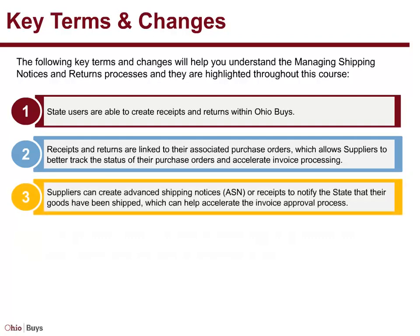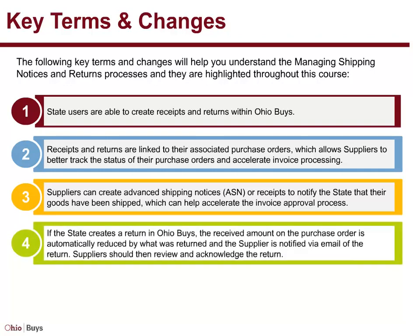Suppliers can create Advanced Shipping Notices or Receipts to notify the state that their goods have been shipped, which can help accelerate the invoice approval process. And, if the state creates a return in OhioBuys, the received amount on the purchase order is automatically reduced by what was returned, and the supplier is notified via email of the return.